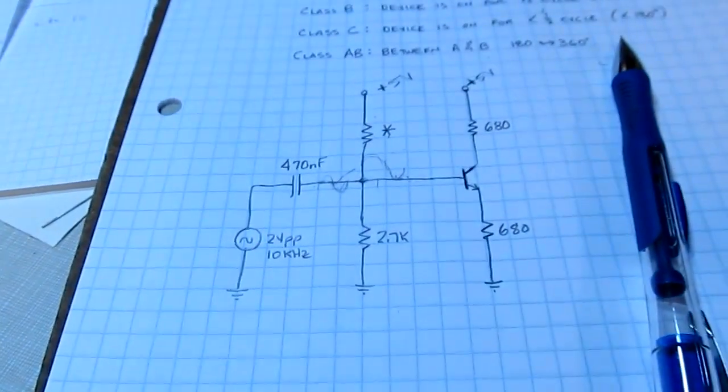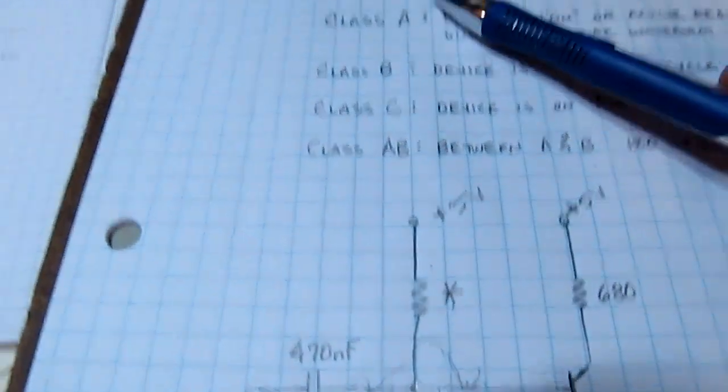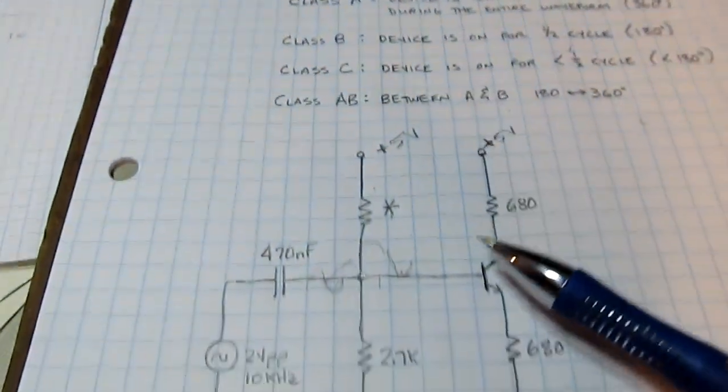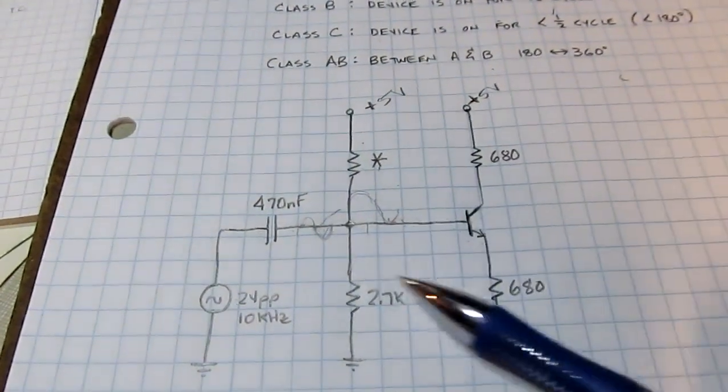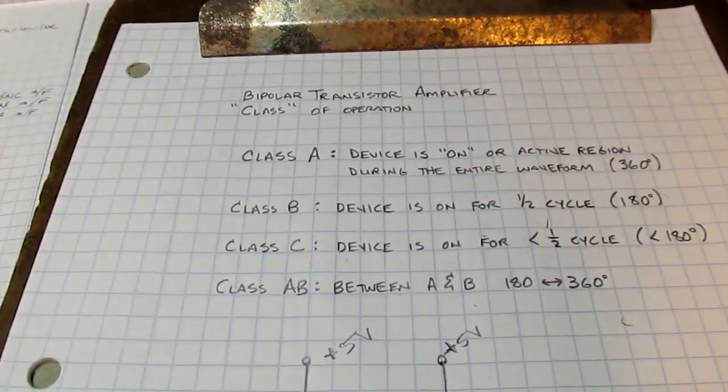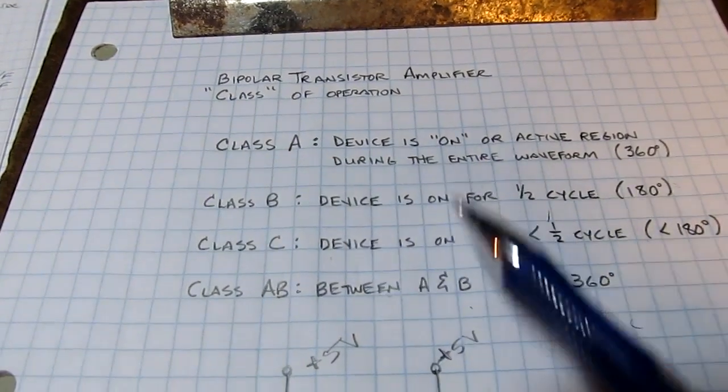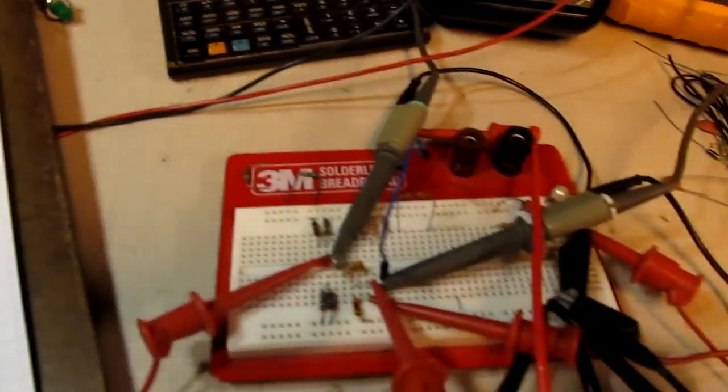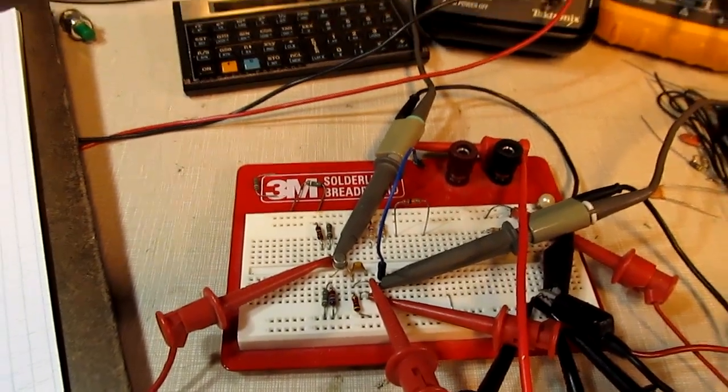So anyway, I hope this short tutorial gave you a little bit better feel for what is meant by different classes of operation and how the bias point on the transistor will affect what operating mode or class the amplifier is operating in. Thanks for watching, and comments are always welcome.